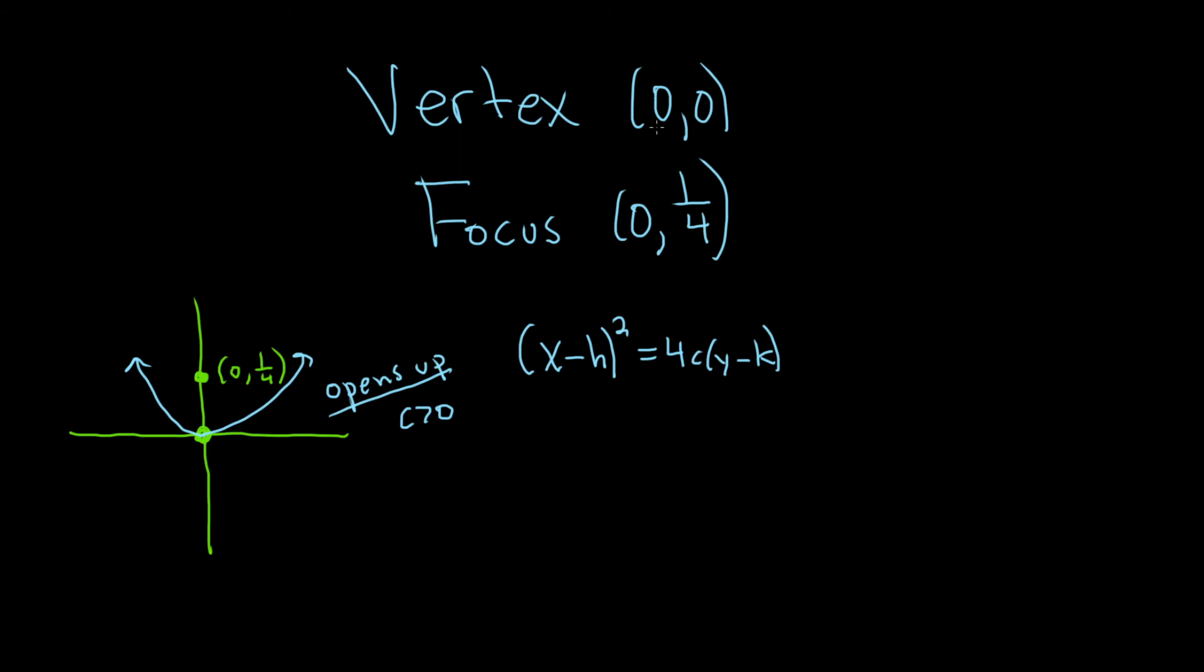The h and k are your vertex. So let's go ahead and plug those in. We have (x - 0)², and that's equal to 4c times (y - 0). So we have x² = 4cy.